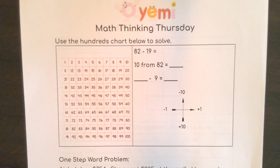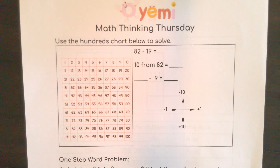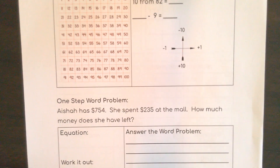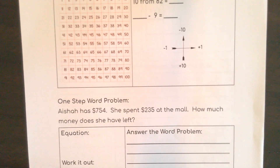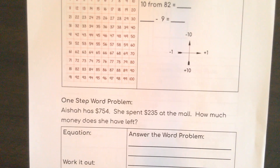Hello, hello there and welcome to a Math Thinking Thursday. We're going to use a hundreds chart to help us solve 82 minus 19. And then down here at the bottom, we are going to work with Aisha to solve a one-step word problem.